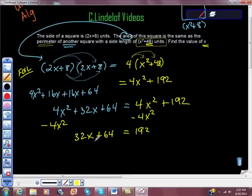I'm going to move all the constants to this side, so I'm going to add negative 64 to both sides. And that gives us 0 here. And 192 minus 64 is 128.